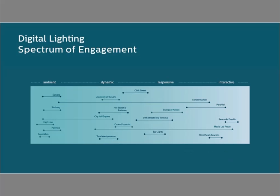I'd like to propose a spectrum of engagement for digital lighting that allows us, as a tool, to think about the different types of experiences people are creating today. This isn't meant to be a mutually exclusive set of categories; however, it's meant to help us subdivide and categorize the different types of designs we see today and give us a sense of the diversity of skills and backgrounds being brought to bear on the design of urban public spaces, whether it's interaction designers, lighting designers, theatrical specialists, or urban designers.